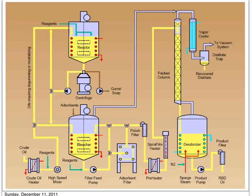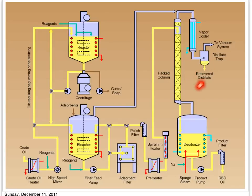Because the next step is deodorization. Before the oil goes through the deodorization process, it is very important to make sure the oil doesn't contain any residual bleaching earth or soap from the previous step. Here we have a high packed distillation column to deodorize and remove the free fatty acids and volatiles from the oil. The volatile material is recovered as a distillate and the oil is recovered as RBD oil — refined bleached deodorized oil.